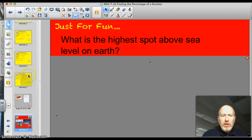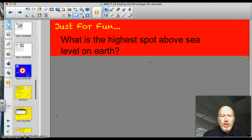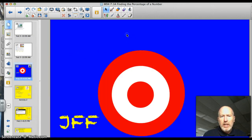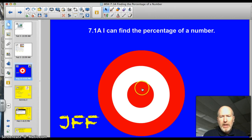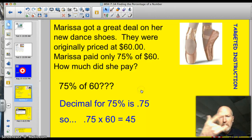What is the highest spot above sea level on Earth? We'll get back to that question after our instruction tonight. Officially, our target is 7.1a. I can find the percentage of a number. Let's do this thing.